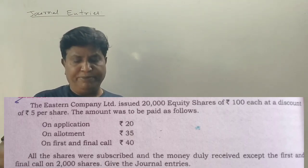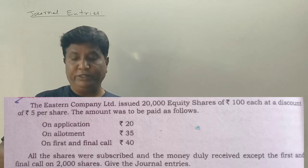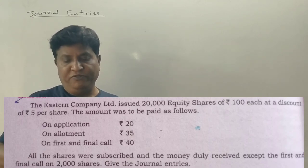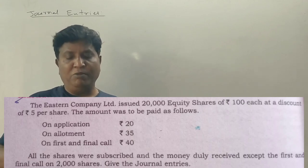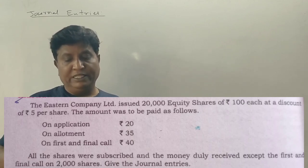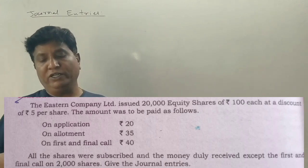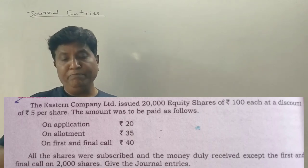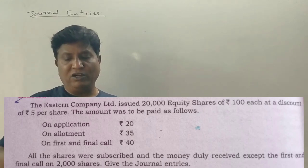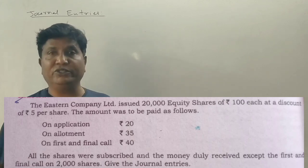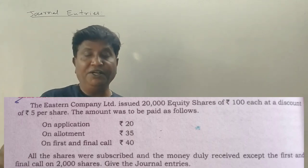The Krishna Company issued 10,000 shares of ₹100 each at a premium of ₹10 per share. The amount payable was as follows: application ₹20 per share, allotment ₹40 per share including premium, and first and final call ₹50 per share. All the shares were subscribed and the money was duly received. Pass journal entries.